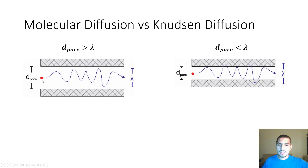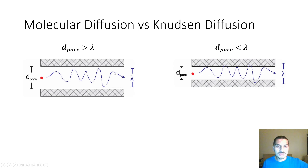We have a gas molecule diffusing through this pore, and there are two options. The first is when the pore diameter is larger than the mean free path of the gas molecule. In this case, the gas molecule moves freely without any hindrance through the pore — as if it were moving through open air. This is called pure molecular diffusion, and it occurs in the case of very large pore diameter.